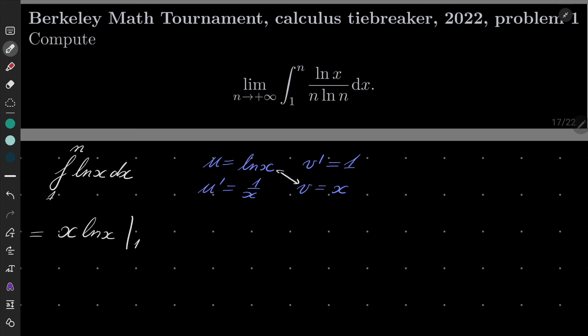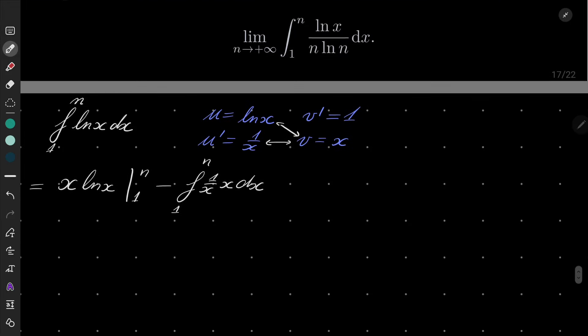evaluated from 1 to n of course, and then I have to subtract integral of this times this. So it's integral from 1 to n of 1 over x times x dx. Okay and what happens?